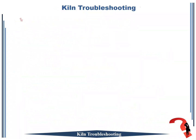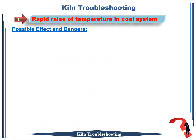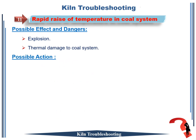Rotary kiln troubleshooting number 11: rapid rise of temperature in coal system. Possible effects and dangers that occur in this case: firstly, explosion; secondly, thermal damage to coal system.